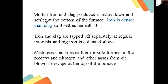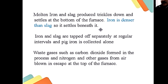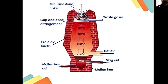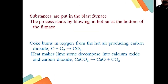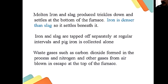Molten iron and slag trickle down and settle at the bottom of the furnace. Iron, being denser than slag, settles beneath it. Iron and slag are tapped off separately at regular intervals. The iron collected is known as pig iron. Waste gases such as carbon dioxide and nitrogen escape from the top of the furnace. This is how the whole extraction process works, and you should know all five equations well.